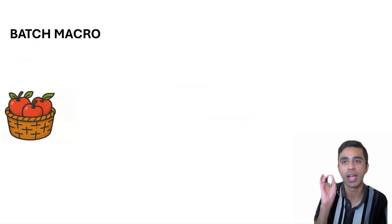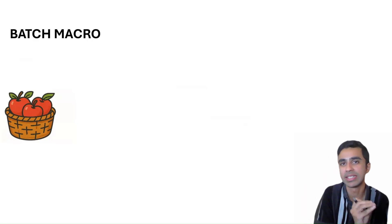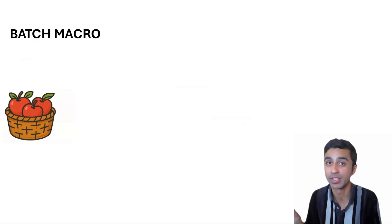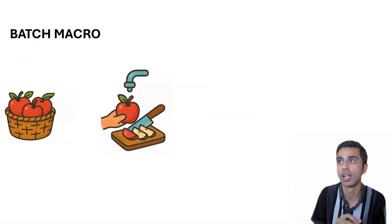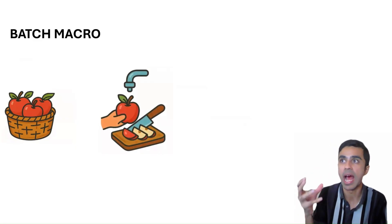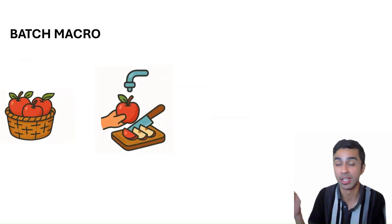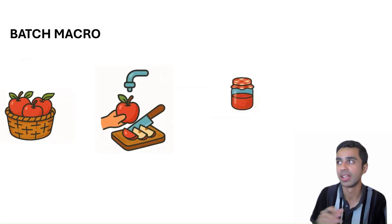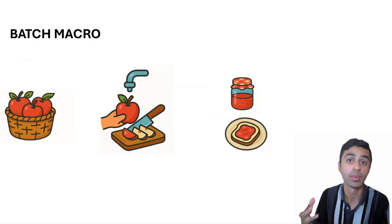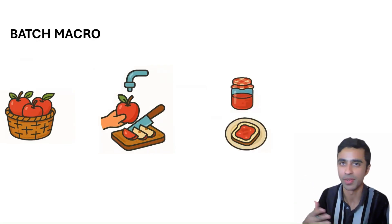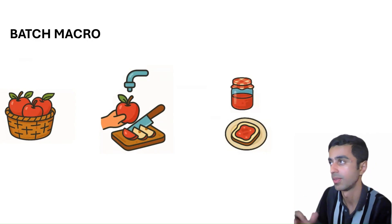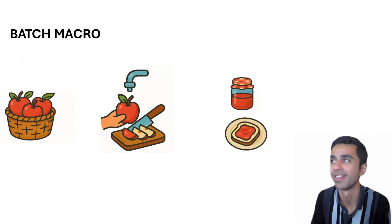Let's suppose that we're doing the same series of steps to every apple in this basket. So we're going to take the apple, wash it, cut it into nice slices, prepare a jam from it, and then apply jam to a bread and consume it or give it to a kid.